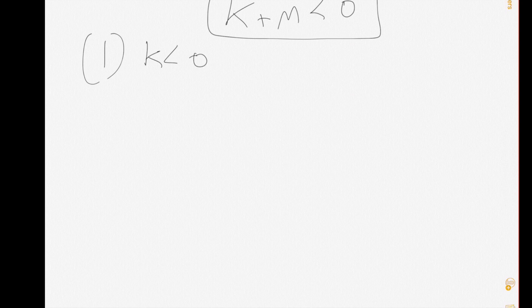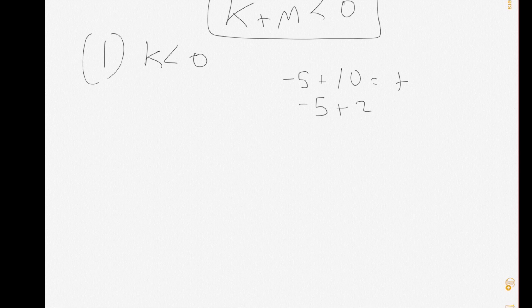Going back to number one, we have k is less than zero, so k is a negative number. Let's say negative 5 — but we don't know what m is. m could be positive 10, and negative 5 plus positive 10 is a positive number. Or m could be positive 2, and negative 5 plus positive 2 is a negative number. So if all we know is k is less than zero, we cannot know for sure that k plus m is less than zero.